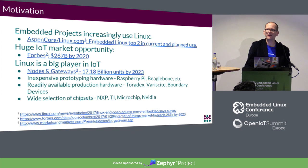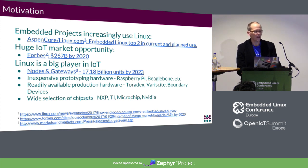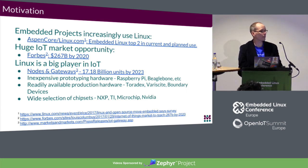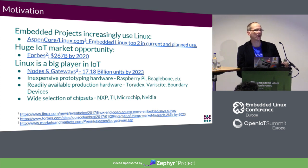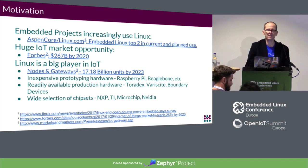Our embedded projects are increasingly using Linux. Again, this is the Embedded Linux Conference — not hard to sell most folks here on that. The market opportunity is pretty big: $267 billion by 2020, and Linux is an extremely big player in that market. Nodes and gateways are estimated at over 17 billion units by 2023, driven by relatively inexpensive hardware — things like Raspberry Pi, BeagleBone — and production hardware from manufacturers like Toradex, Verisite, and Boundary Devices, with semiconductor manufacturers also playing a big part.